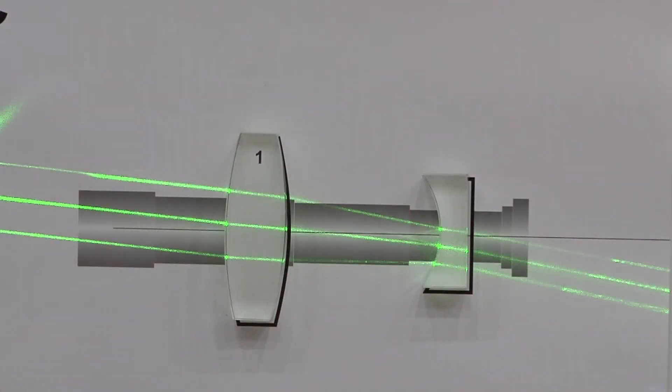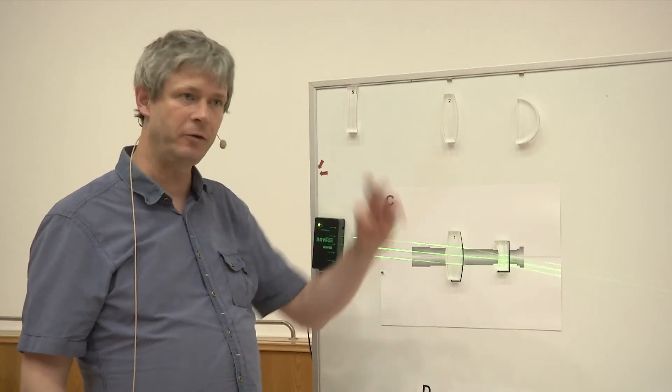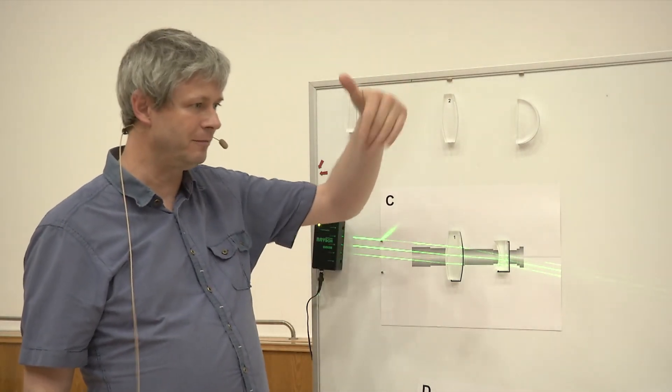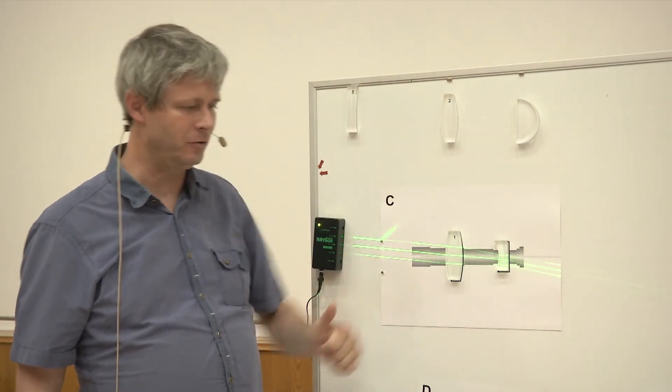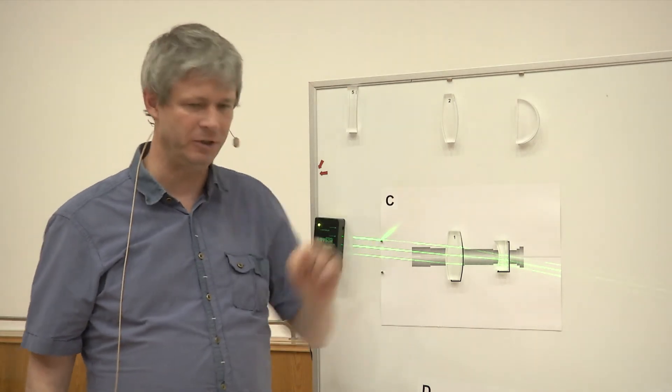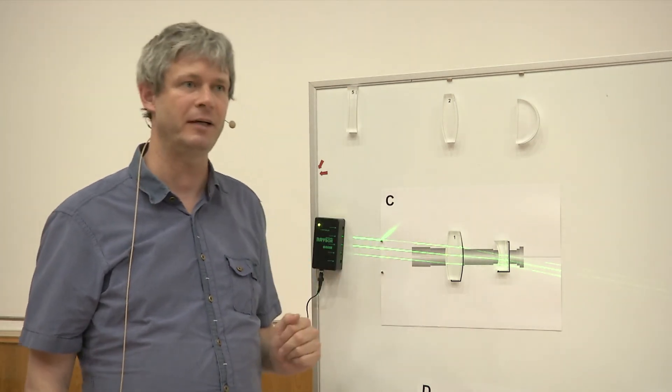This is a good telescope for terrestrial observations because you see everything upright, and that's a bit disturbing if you have the Earth pointing to the top and the sky pointing downwards as in a Keplerian system. So this is upright.